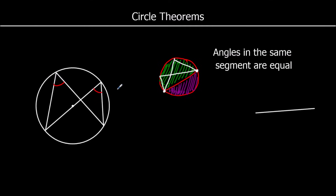This angle and this angle are equal — they come from the same points. These two angles also come from the same points, they're in the same segment, so they are also equal. We could use other words: 'from the same arc' — the curved bit — or 'from the same chord.' What they all mean is two angles that come from the same two points are equal, as long as they're in the same segment.